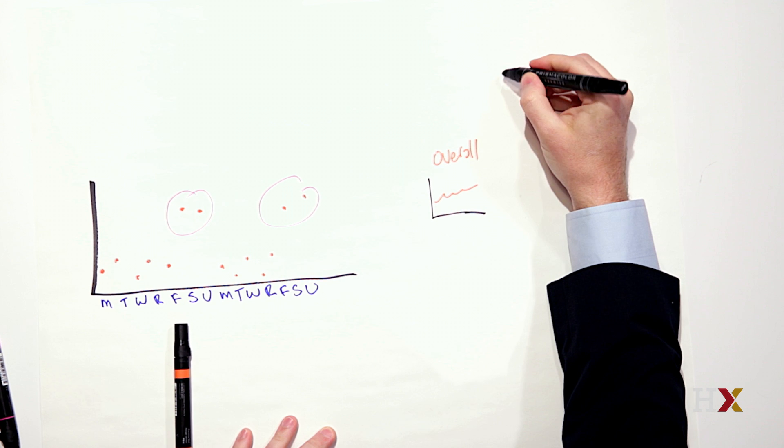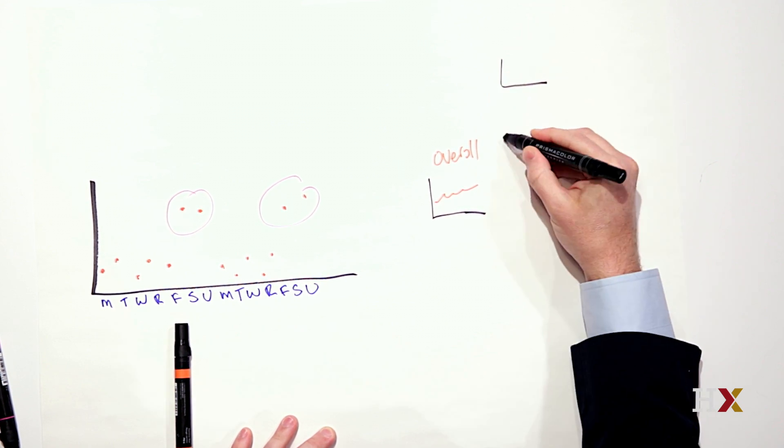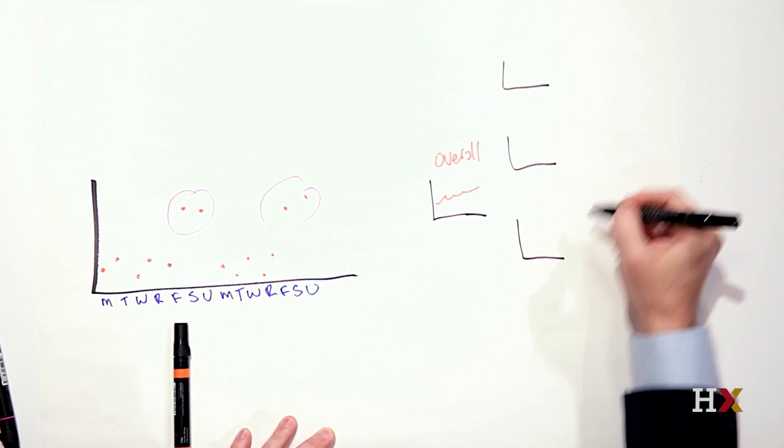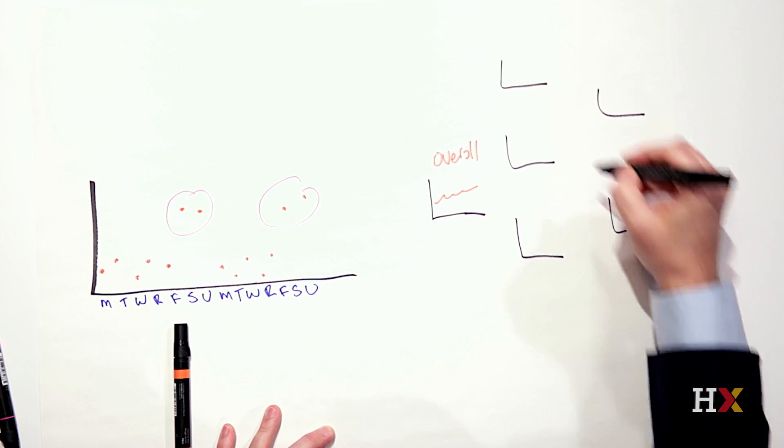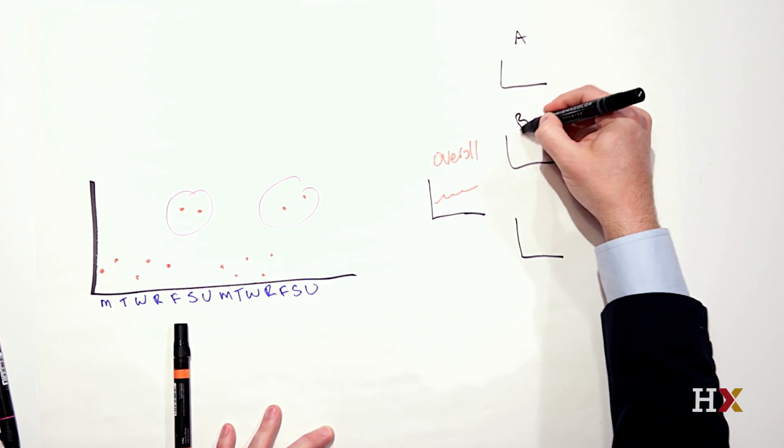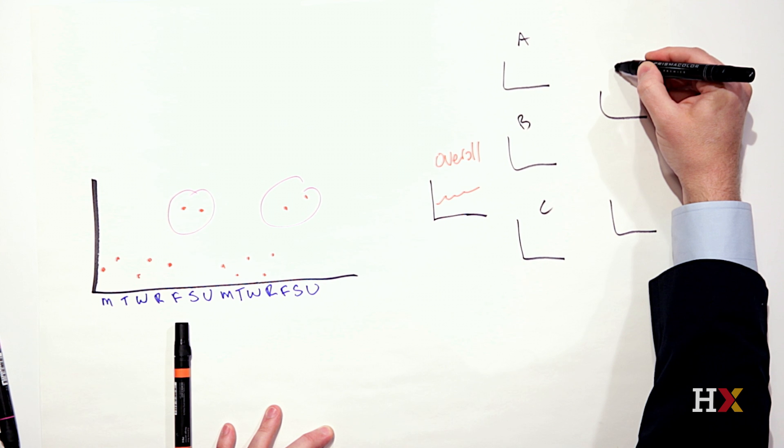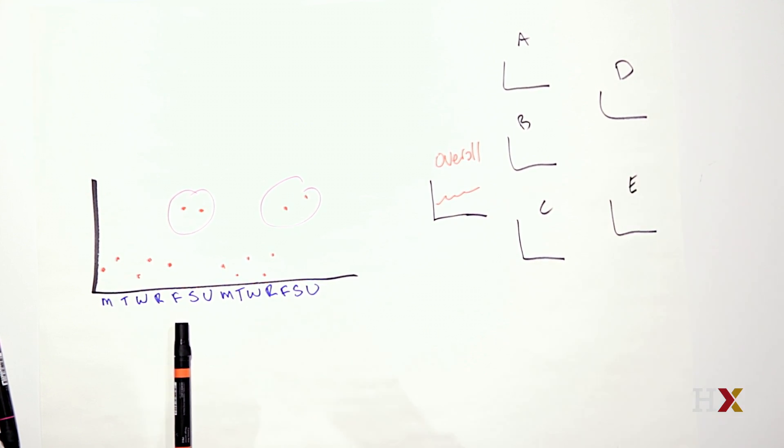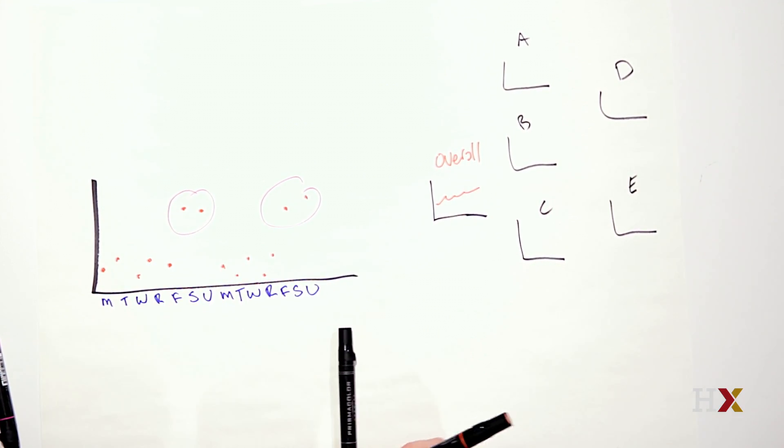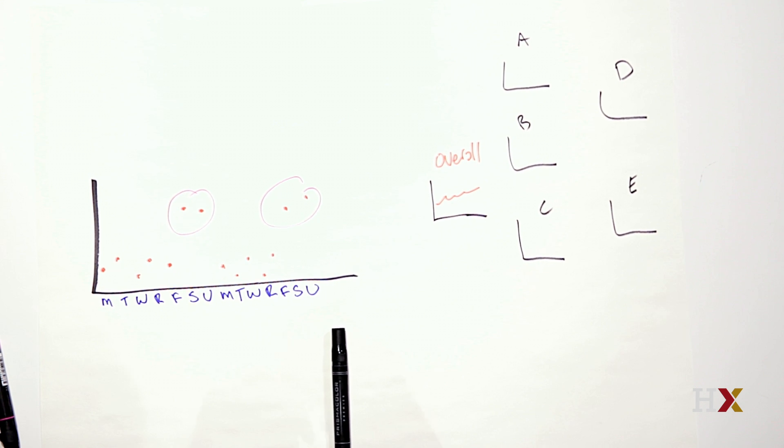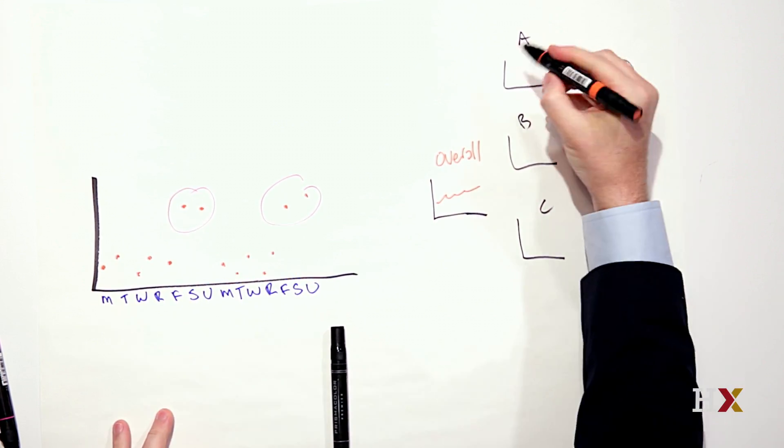And so we might have several different places that we're looking at. We'll just call them A, B, C, D, and E.